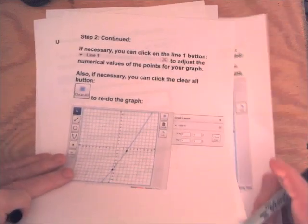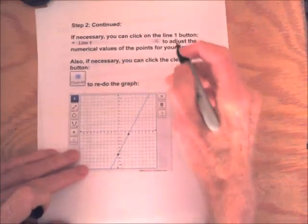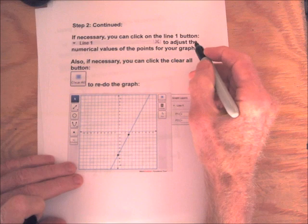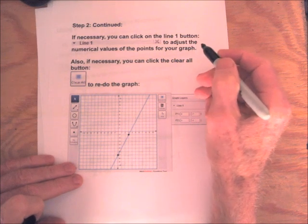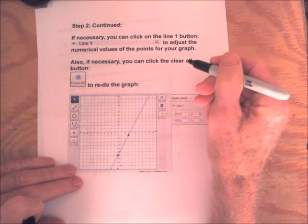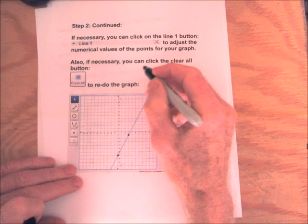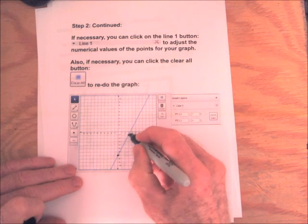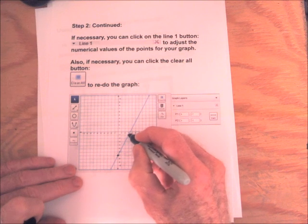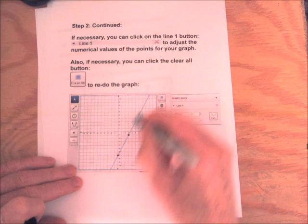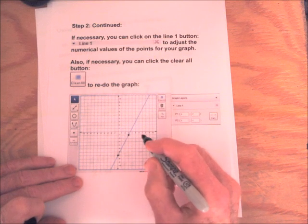And then we can plot the second point. The 3 comma negative 1 is the second point. And once we click on that point, that point should show and also the line should fill in between the two points.